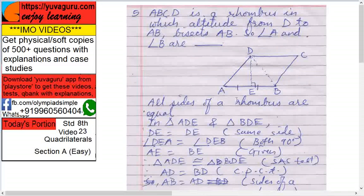All sides of rhombus are equal. Now in triangle ADE and triangle BDE, what is the case? DE equals to DE, same side. Then angle DEA equals to angle DEB, 90 degrees both. Why? Altitude. Altitude means 90 degrees. AE equals to EB, given. That's what is given: bisects AB.